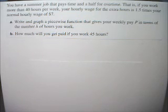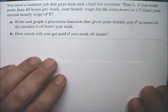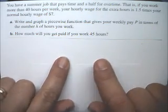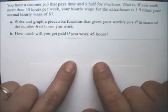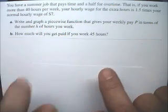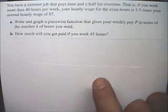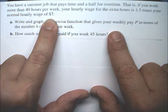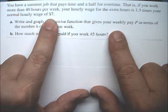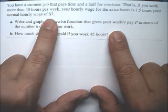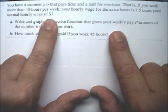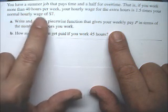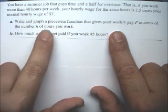Hello, this is Linear Equations and Functions, Piecewise Functions, Example 6. This story problem talks about a summer job where your pay is $7 per hour, but you get time and a half for overtime. Time and a half means you get $7 plus half of $7, which is $3.50, so for overtime pay you're getting $10.50 per hour. Up to 40 hours you're getting $7, and after 40 hours you're getting $10.50.